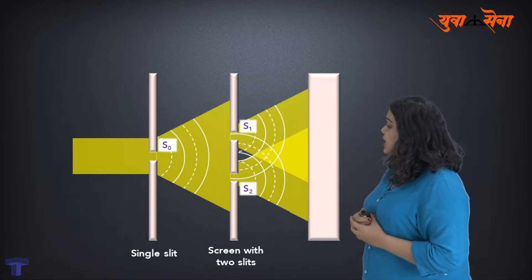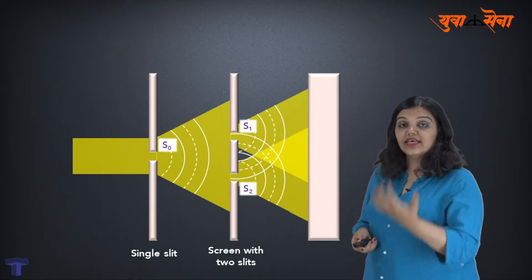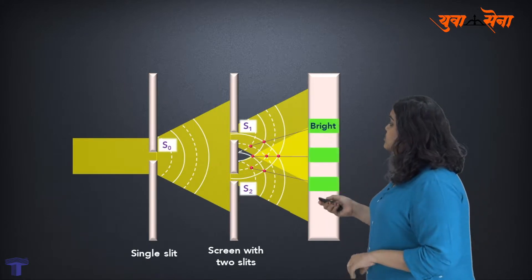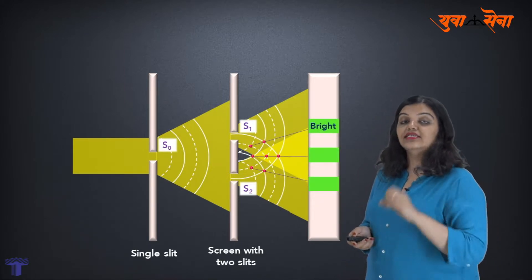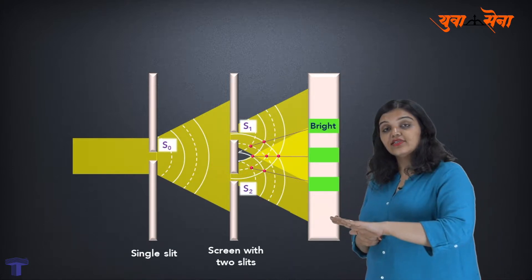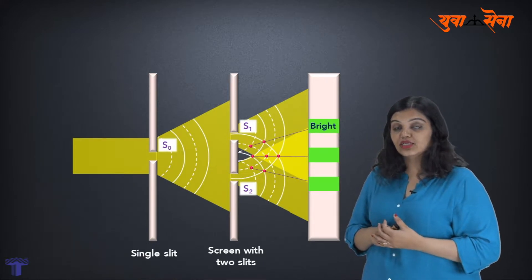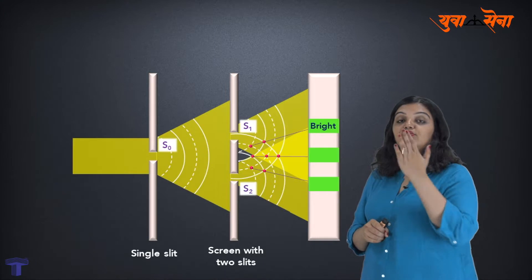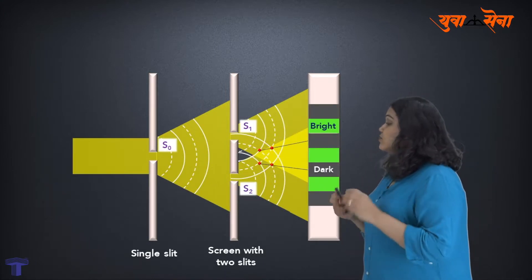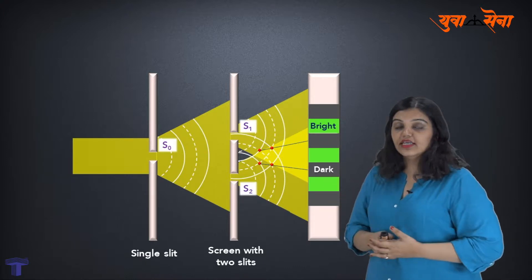In Young's double slit experiment, when the crests of one set of waves fall on the crests of the other set of waves, we get regions of bright intensity — maximum brightness. Similarly, troughs falling on troughs also give maximum brightness regions. When the crest of one set falls on the trough of the other, those are the dark regions — regions of low intensity. So the interference pattern has bright and dark regions.